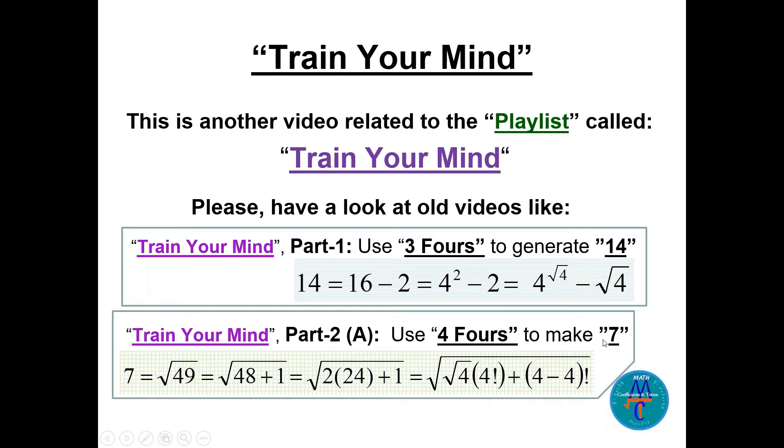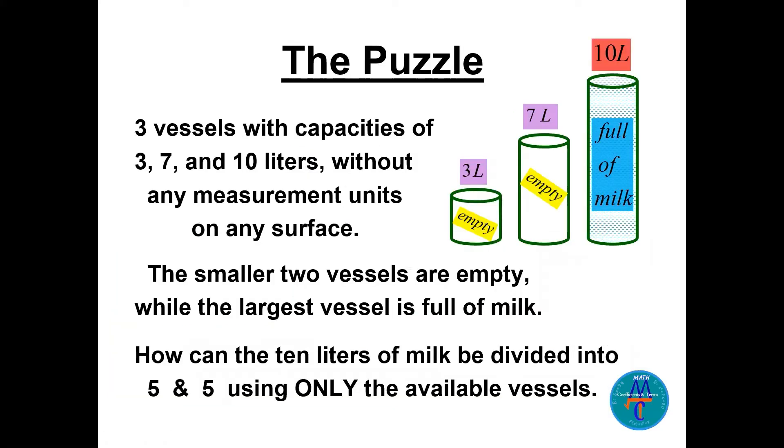So this is zero factorial. This is four fours to make 7. Let's go to our puzzle. The puzzle here: we have three vessels with capacities 3, 7, and 10 liters without any measurement units on them. The smaller two vessels are empty and the largest is full of milk, 10 liters. How can the 10 liters of milk be divided into five and five using only the available vessels?